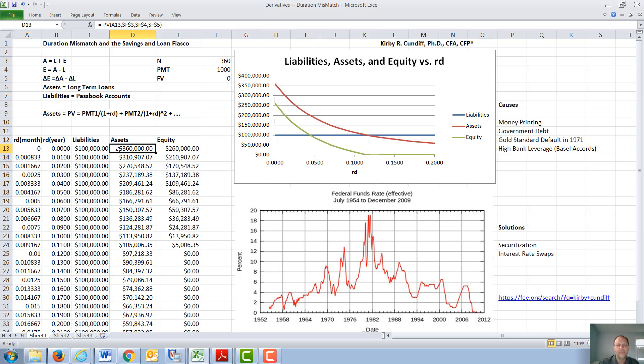The value of this asset to the bank is going to go down as interest rates go up. $360,000 if there is no interest rate. As interest rates increase, up here to around 5%, $166,000, $105,000 at 11%, etc. And therefore, the value of the assets, which is our red line here, will go down as interest rates increase.